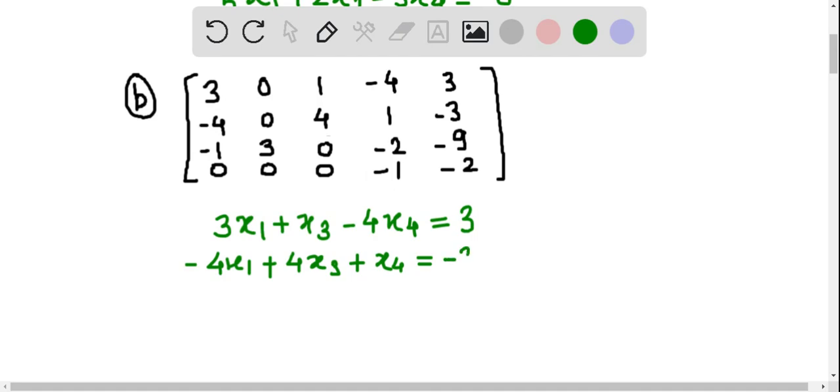From the third row, we can write minus x1 plus 3x2 minus 2x4 is equal to minus 9.